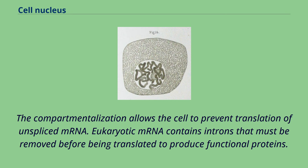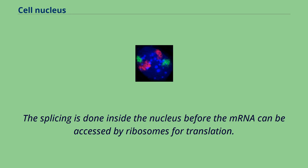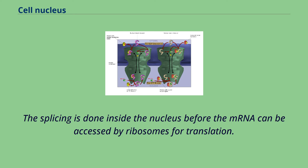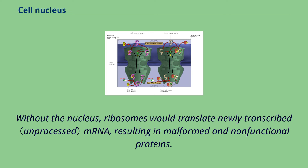Eukaryotic mRNA contains introns that must be removed before being translated to produce functional proteins. The splicing is done inside the nucleus before the mRNA can be accessed by ribosomes for translation. Without the nucleus, ribosomes would translate newly transcribed mRNA, resulting in malformed and non-functional proteins.